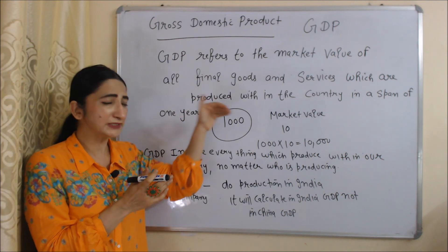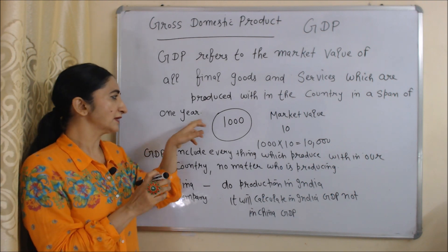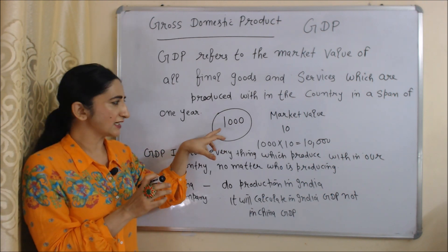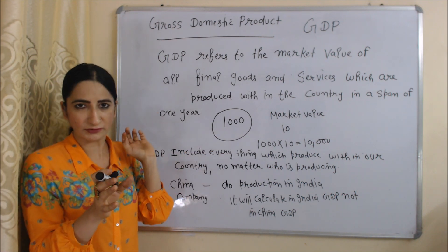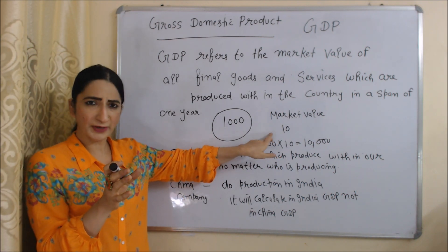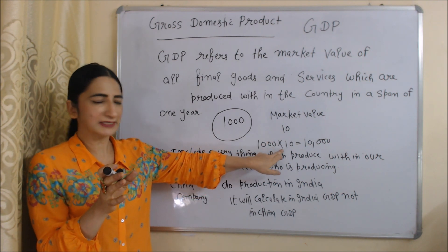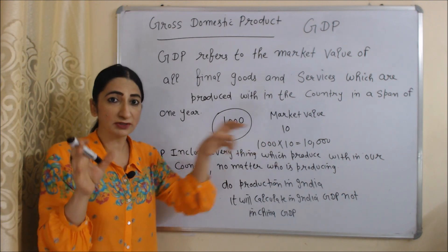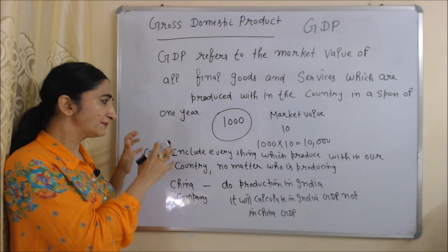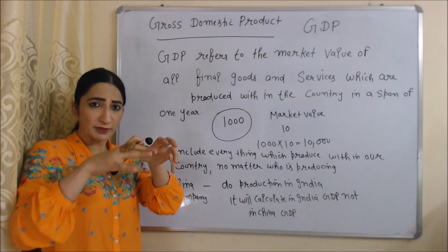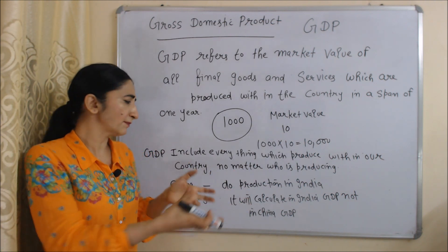For example, total final goods produced in India is 1000, and the market price per good is 10. 1000 multiplied by 10 is equal to 10,000 — this 10,000 will be called our GDP. One most important thing: GDP includes everything which is produced within our country, no matter who is producing. For example, a company from China doing production in India will be calculated in India's GDP, not in China's GDP.